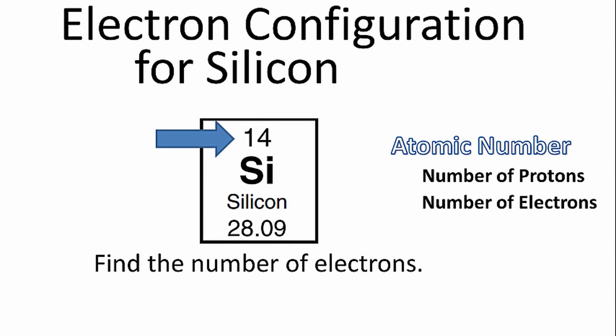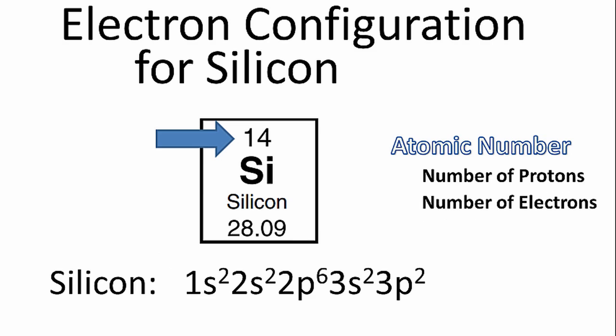That's the number above the element symbol. It's the number of protons, but it's also the number of electrons. And once we have the number of electrons, we can use that to write the electron configuration for silicon.